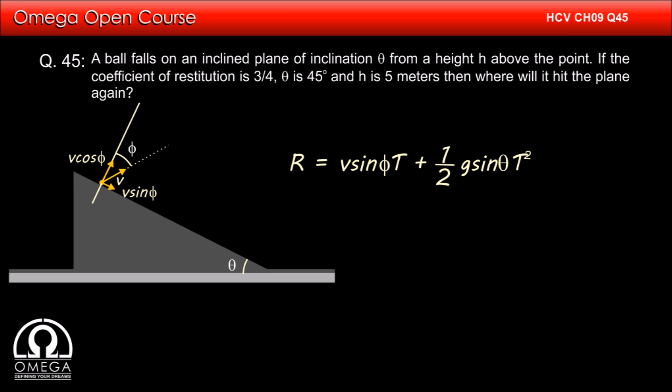Range is v sin φ × t + (1/2)g sin θ × t². Putting v sin φ as u sin θ and t as 2eu/g, we get u sin θ × 2eu/g + (1/2)g sin θ × 4e²u²/g².